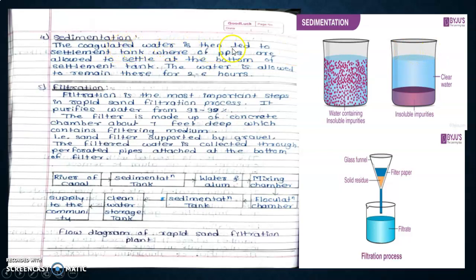Sedimentation: the coagulated water is then led into settlement tank where precipitations are allowed to settle at the bottom of the settled tank. The water is allowed to remain there for 2 to 6 hours.